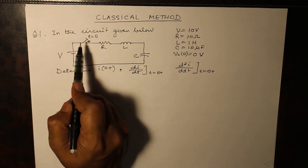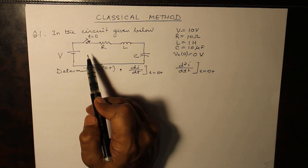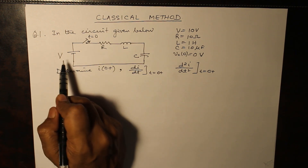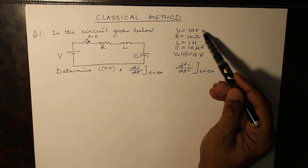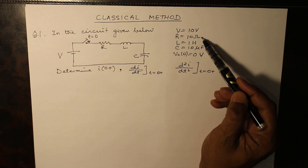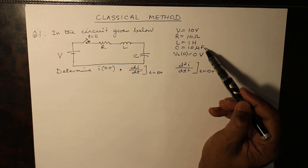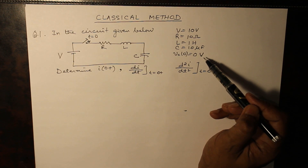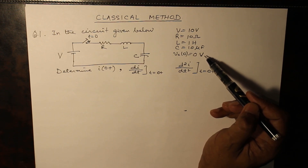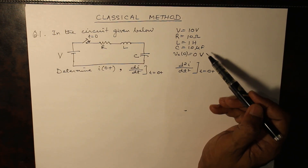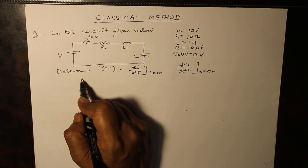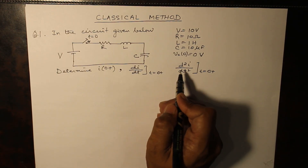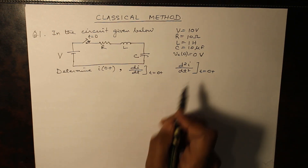In question 1, we see there is a series RLC circuit given with a DC excitation of 10 volts. The values of resistance, inductance, and capacitance in microfarads are provided, and the initial condition of the capacitor is unenergized, so zero. We are required to determine i(0+), dI/dt at t=0+, and d²i/dt² at t=0+.